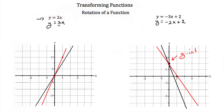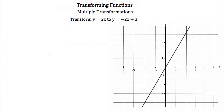Now that we know how to do a vertical translation, a reflection, and a rotation transformation, let's try combining them. We're asked to transform y is equal to 2x into y is equal to negative 2x plus 3. To go from 2x to negative 2x plus 3, we'll do two transformations. First, we reflect — our slope goes from 2 to negative 2 — by reflecting all points across the y-axis. Point (1, 2) becomes (-1, 2), and point (-1, 2) becomes (1, -2). We connect the dots to get the graph of y is equal to negative 2x.